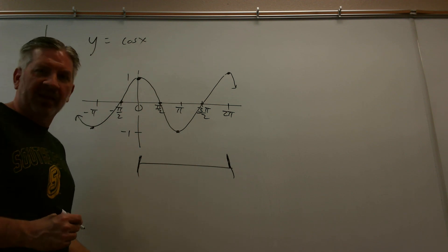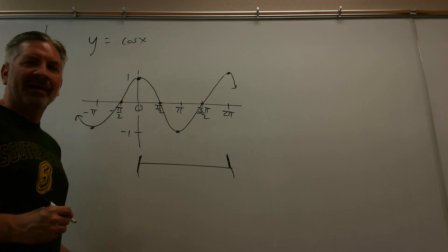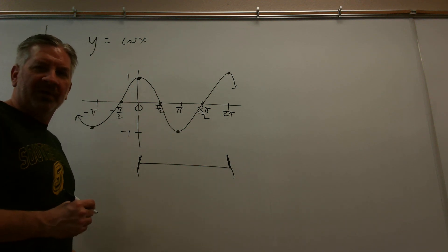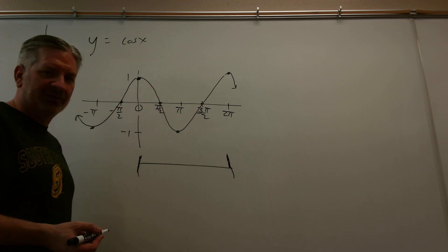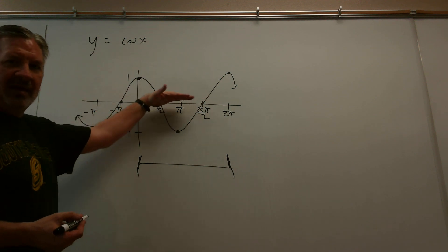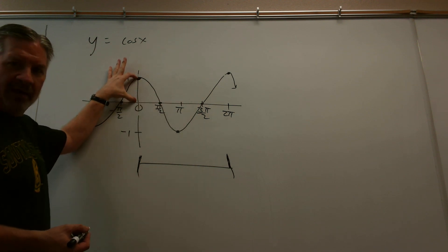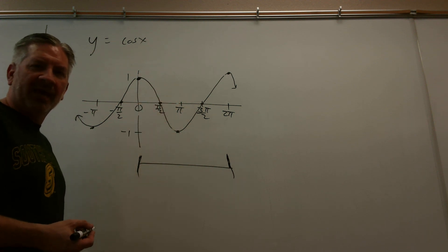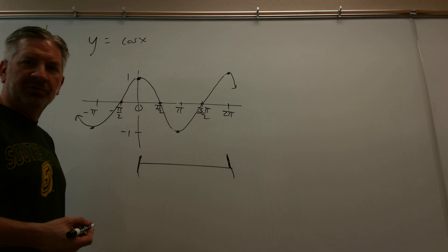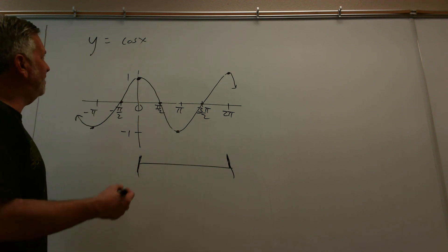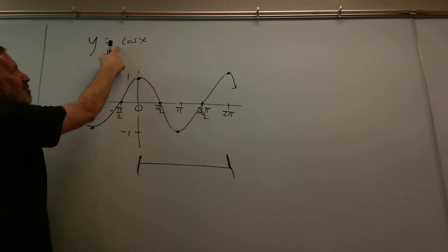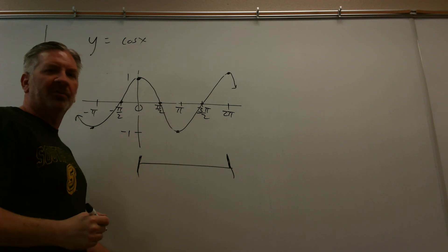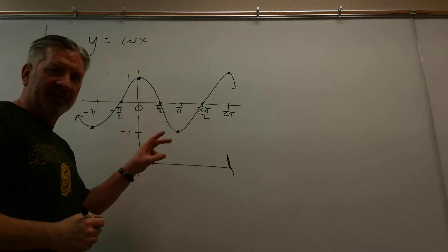We also discussed the amplitude. The amplitude for the sine and cosine graph is how high are the hills and how low are the valleys when you measure from the middle — the x-axis. The hills reach one and the valleys reach one, so the amplitude of your basic sine graph and cosine graph is one. The amplitude is the absolute value of the number being multiplied by the trig function. Don't say it's the number out front — it's the number being multiplied by the trig function, and you take the absolute value.